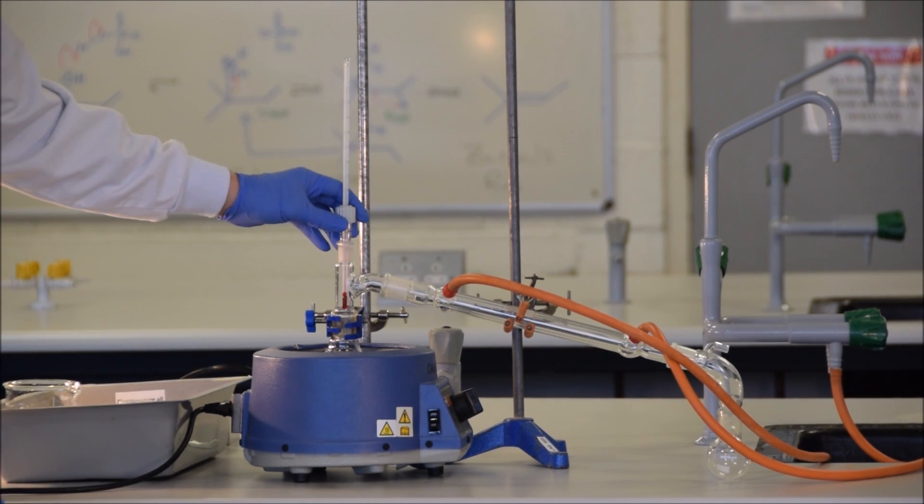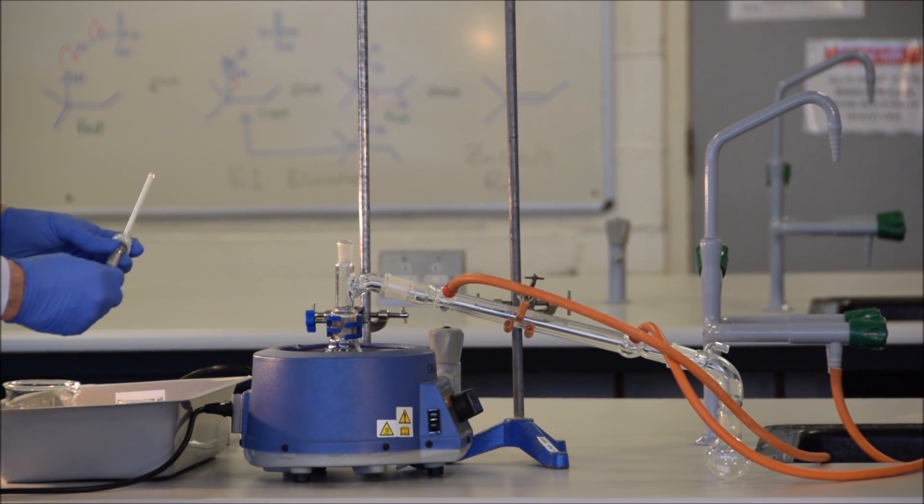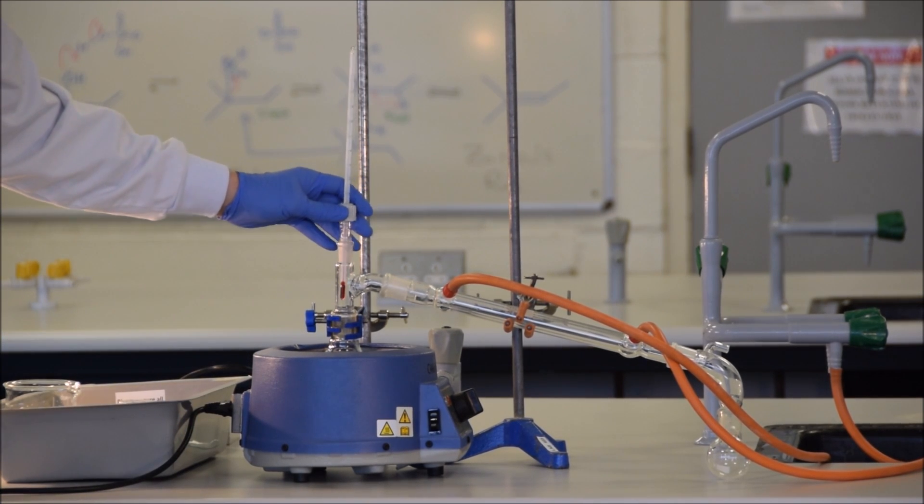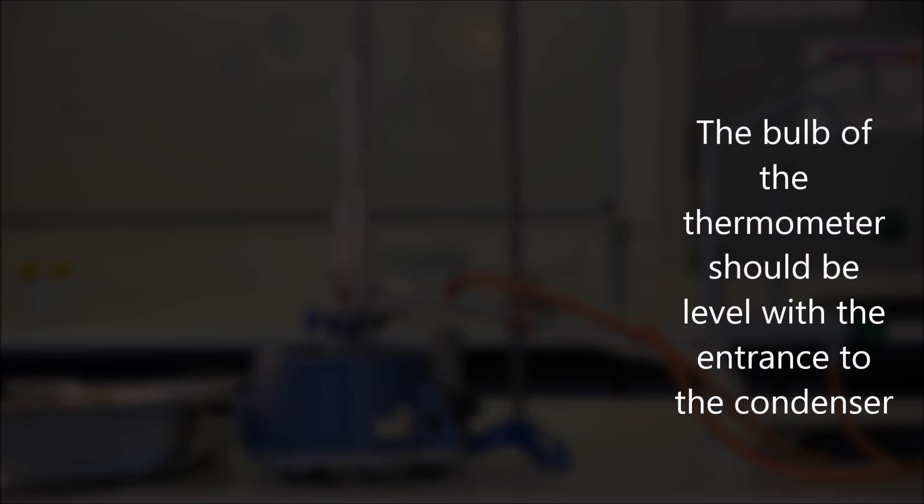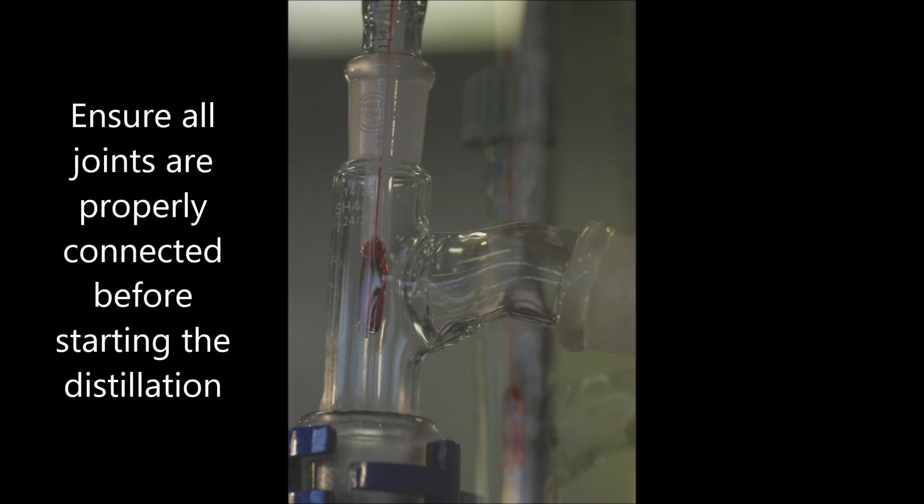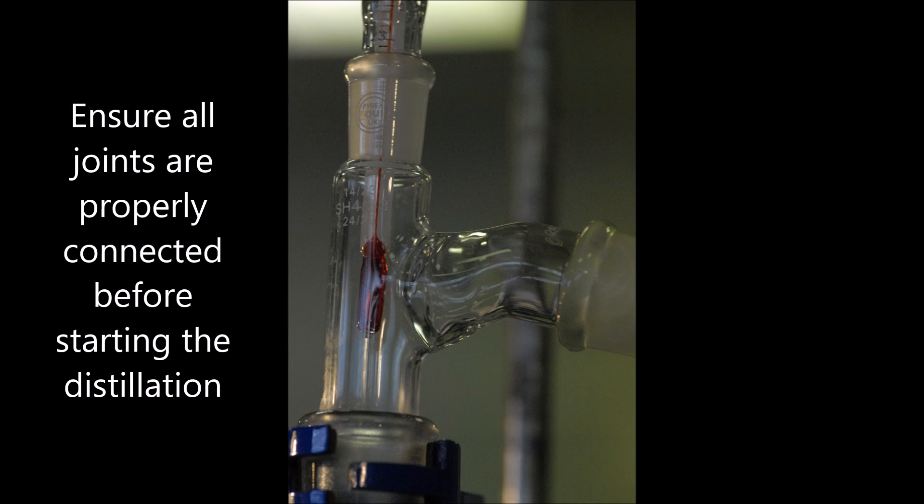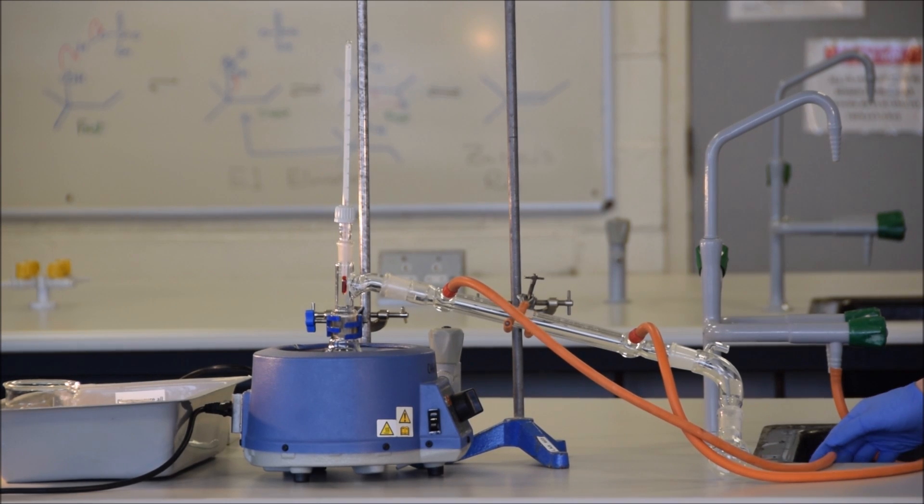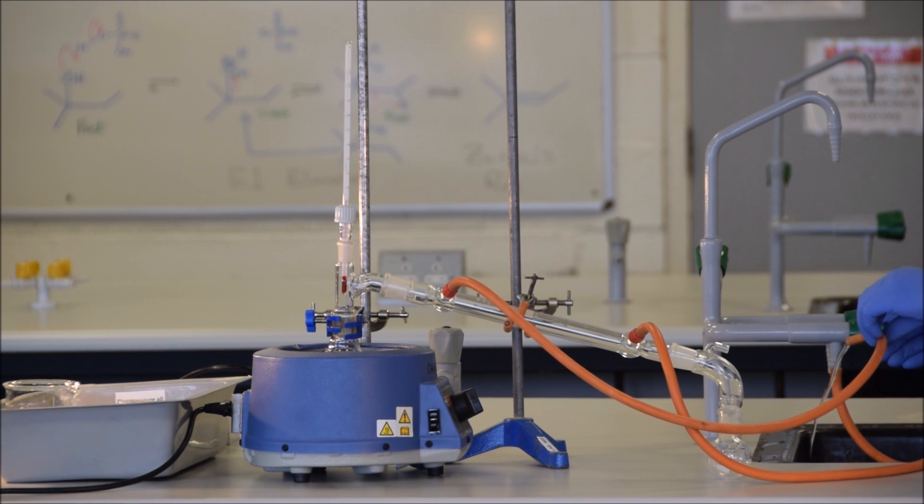The last part in this puzzle is to put in the thermometer. It's important when you put in the thermometer that you put it in at just the right position. What we're trying to measure is the gas temperature of the gas that is making it into the condenser. So we position our thermometer so that the bulb is just in line with where the gas that is entering the condenser is passing by. Then we turn our water on. Notice here the relatively low flow. And then, once we've got the flow adjusted so that it's just a trickle, we can then turn on the heat.